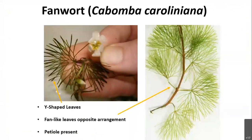Fanwort is a submerged aquatic invasive plant native to South America and southern portions of the United States. It has the capability to grow dense populations that reduce biodiversity, impede recreation, and is easily spread by boat. What you want to look for are leaves that look like a fan — which is where it gets its name — with a Y-shaped fork at the end. The leaves are oppositely arranged and attached to the stem by a long petiole.